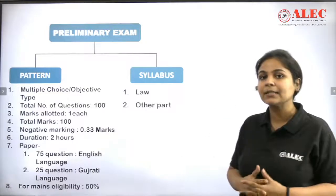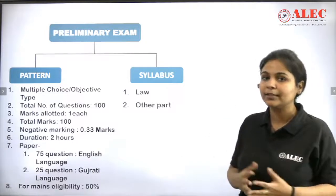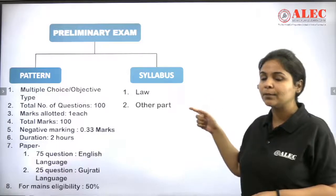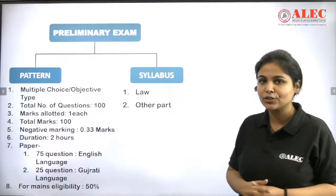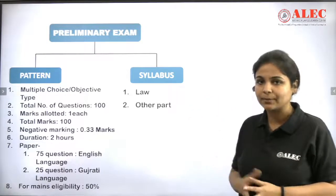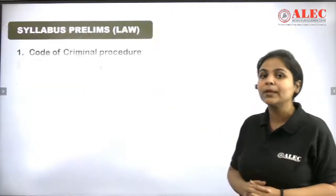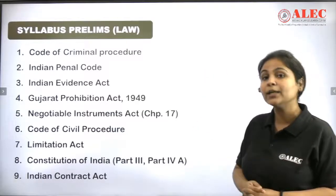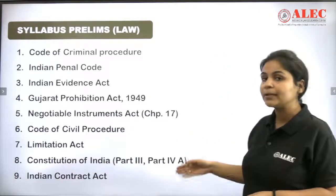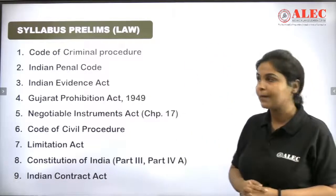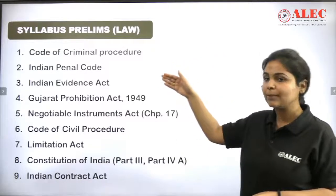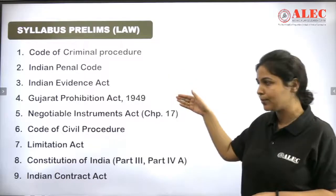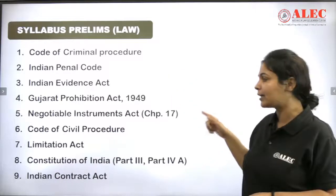Now let's go to the syllabus. The syllabus is divided into two parts: first is Law, and second is Other Parts, which are miscellaneous things. In the Law part, you will get all these subjects in the prelims exam: the Code of Criminal Procedure, IPC (Indian Penal Code), Indian Evidence Act, Gujarat Prohibition Act, and Negotiable Instrument Act.